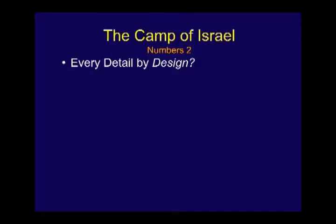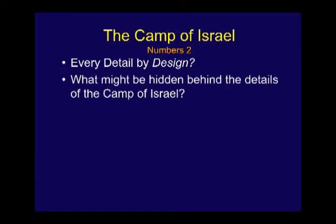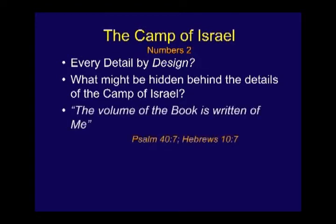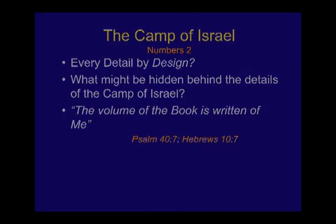I want to show you something else that may come as a surprise, because you always say everything in the scripture is there by design, and some people challenge me: what about Numbers 2? It's a boring chapter, a lot of numbers and stuff. Is every detail there by design? What might be hidden behind the details of the camp of Israel? Jesus said in Psalm 40 verse 7, also quoted in Hebrews 10 verse 7, the volume of the book is written of me. Every detail in the Bible points to Jesus Christ. Let's challenge this here.